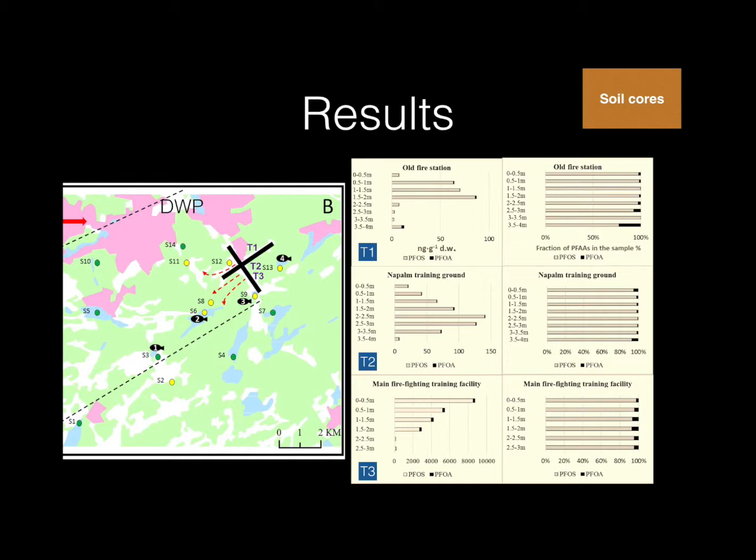In the picture to the left, close to the landing strip, we can see T1, T2 and T3 being marked. These are the sites where we took the soil cores. T1 represents the old fire station, T2 represents the napalm training ground and T3 represents the main firefighting training facility.